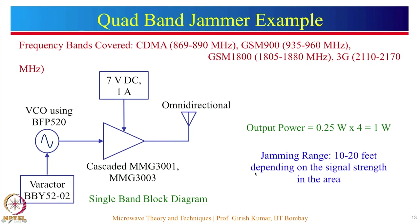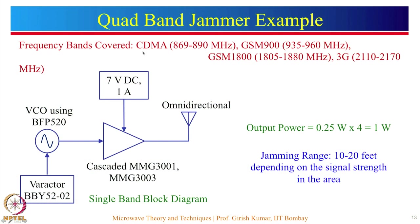A practically implemented quad-band jammer can jam 4 bands: CDMA 869–890 MHz, GSM 900 at 935–960 MHz, GSM 1800, and 3G at 2110–2170 MHz. All these bands are downlink frequency bands — not uplink — which is an important factor. The VCO is implemented using BFP 520 transistors from Infineon Technologies, which we studied in the oscillator class. The VCO is controlled using varactors BBY 5202.